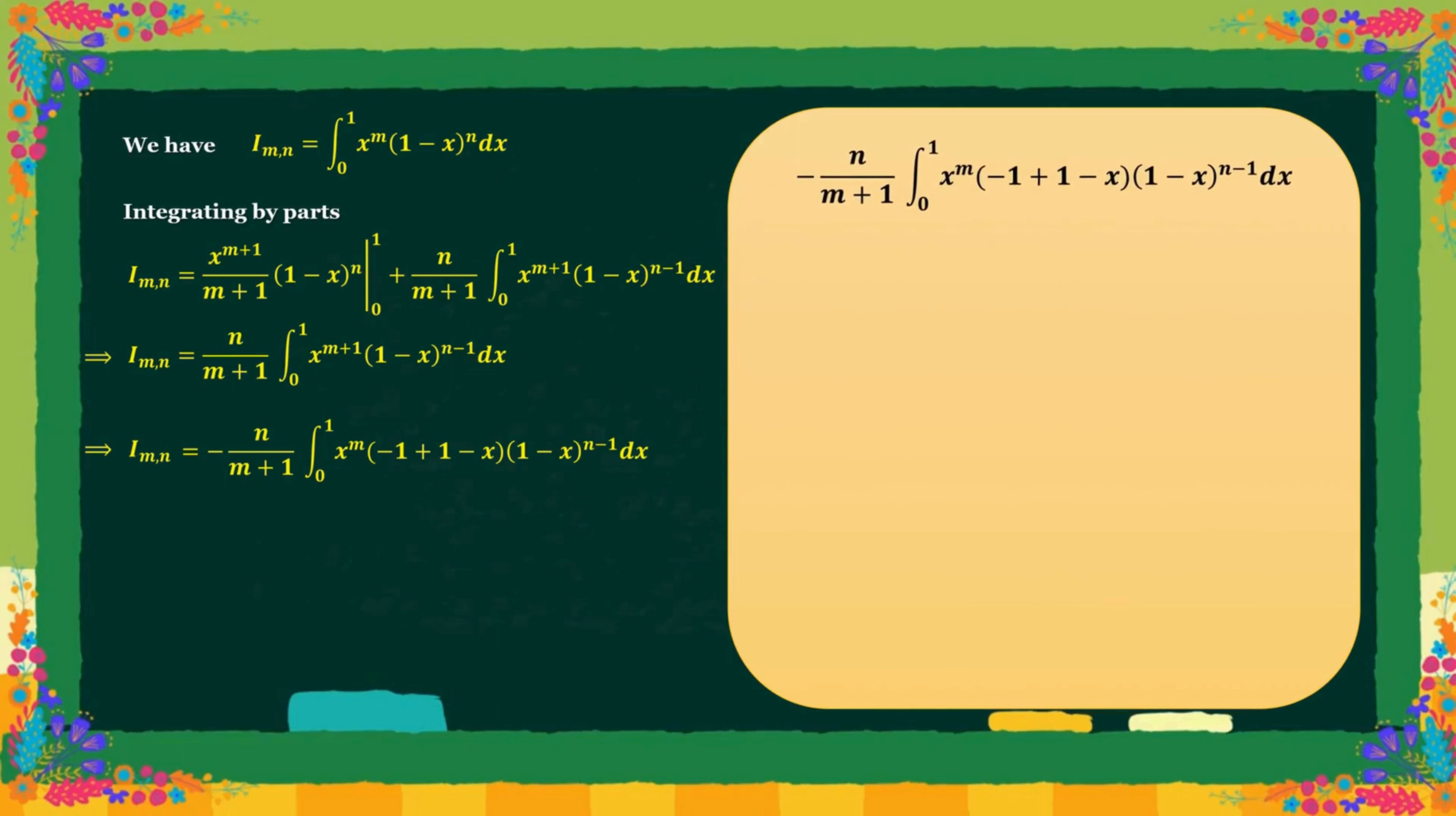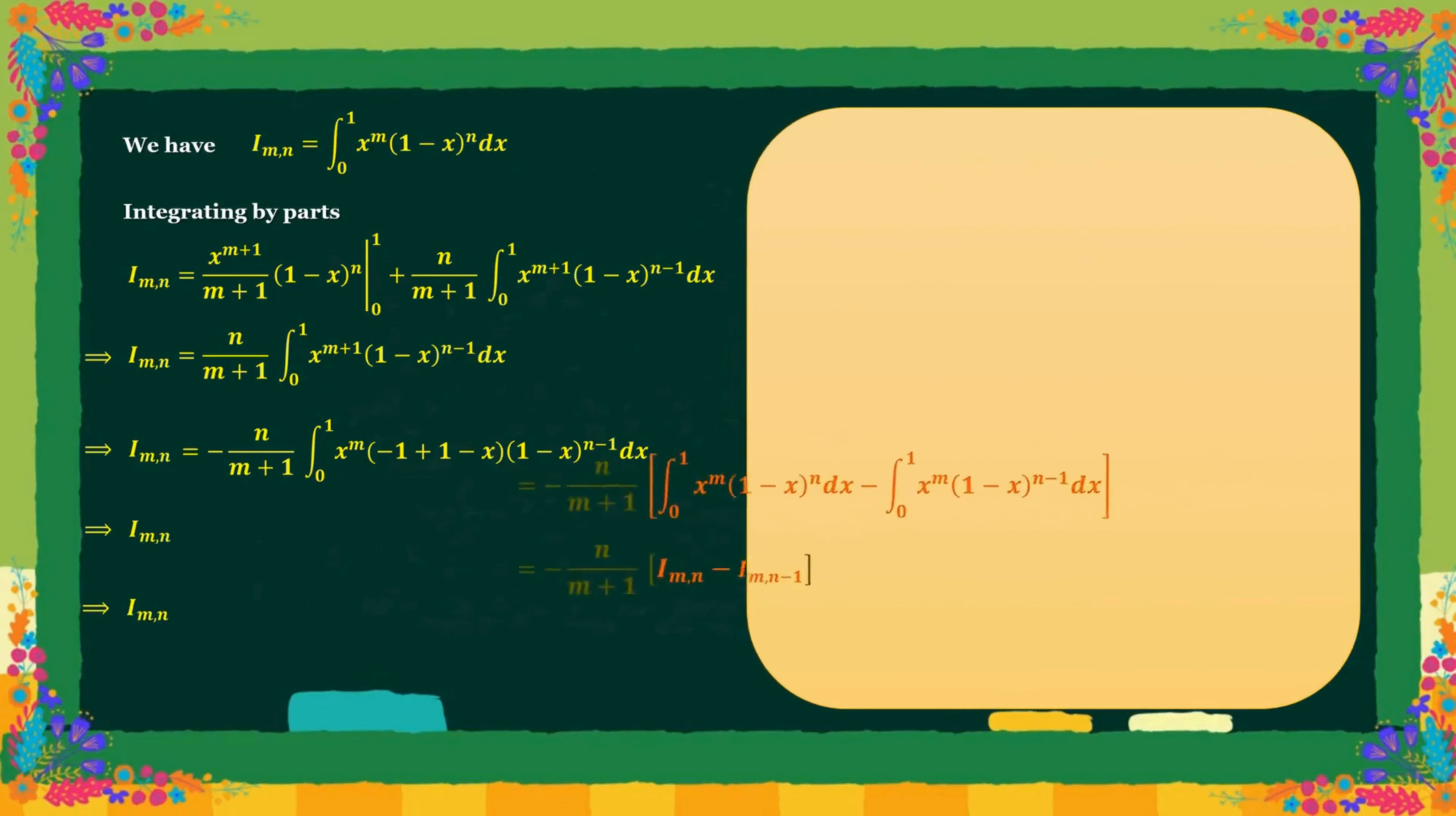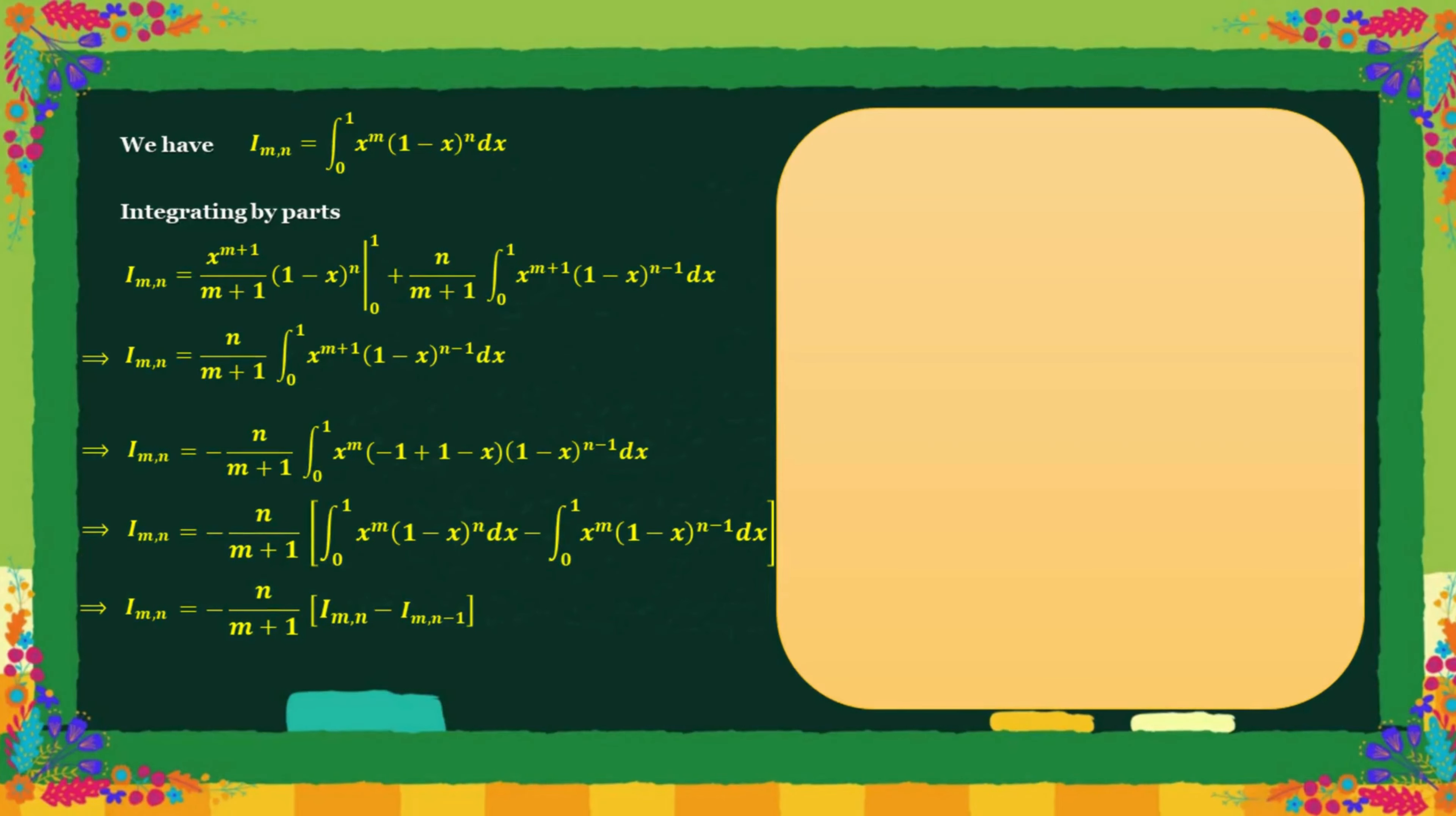After simplifying, we get I m n is equal to minus n over m plus n times I m n minus I m n minus 1.